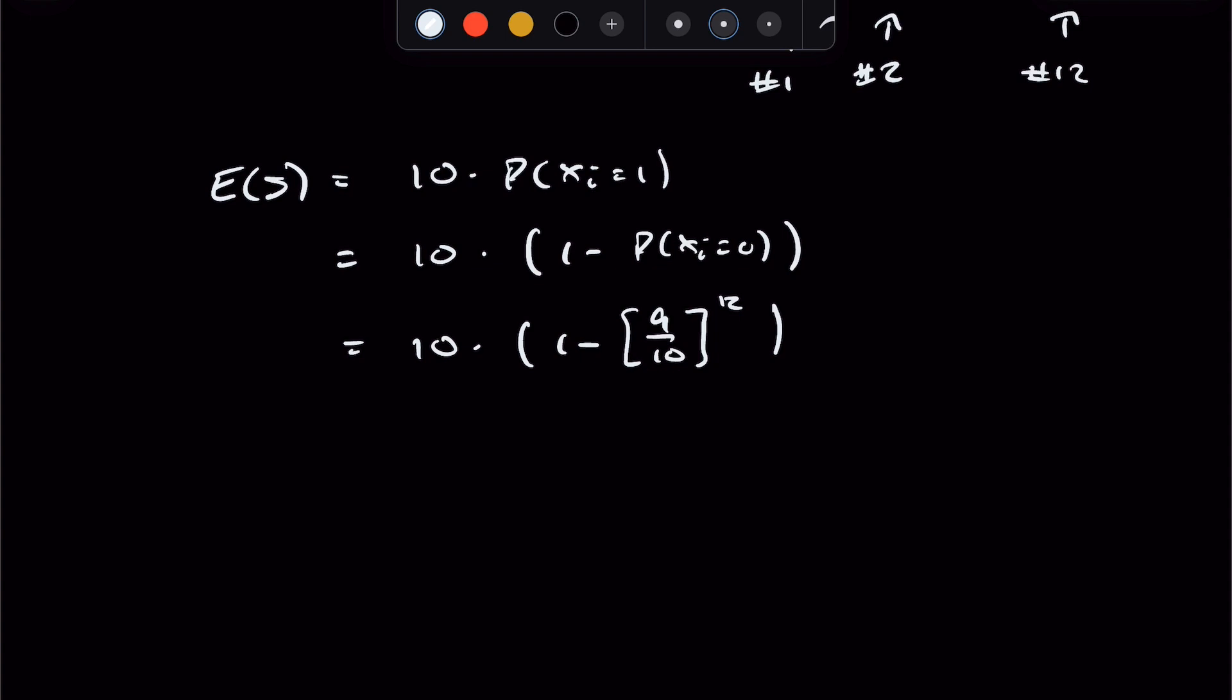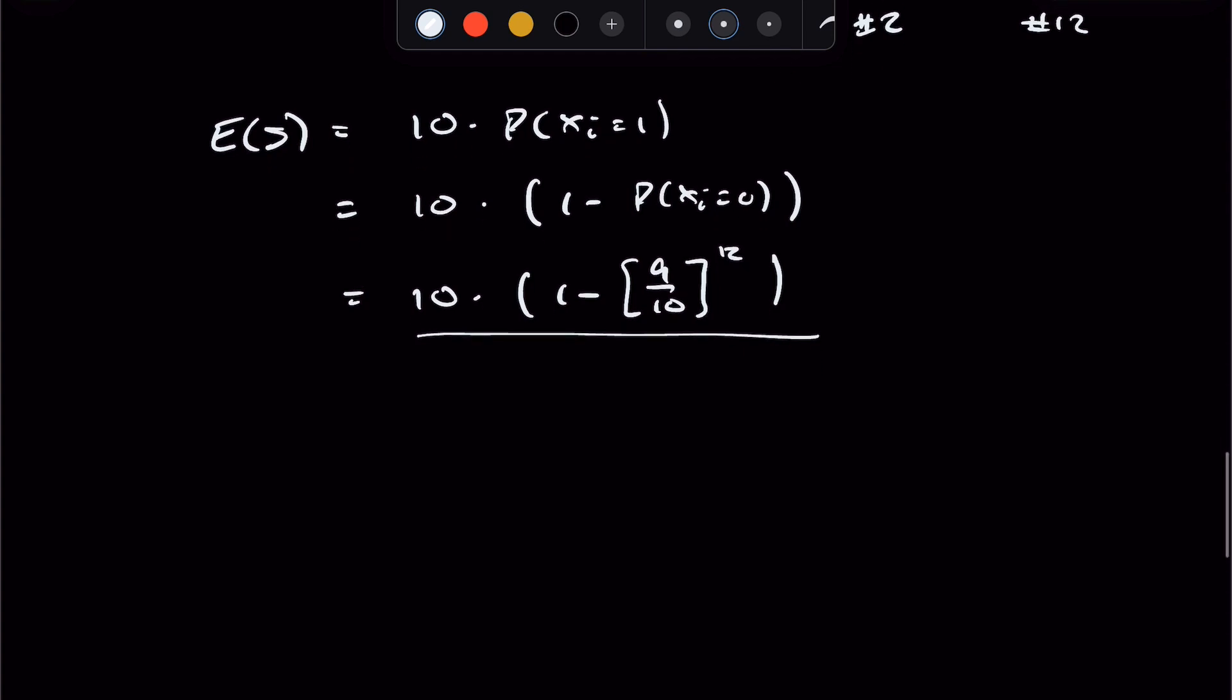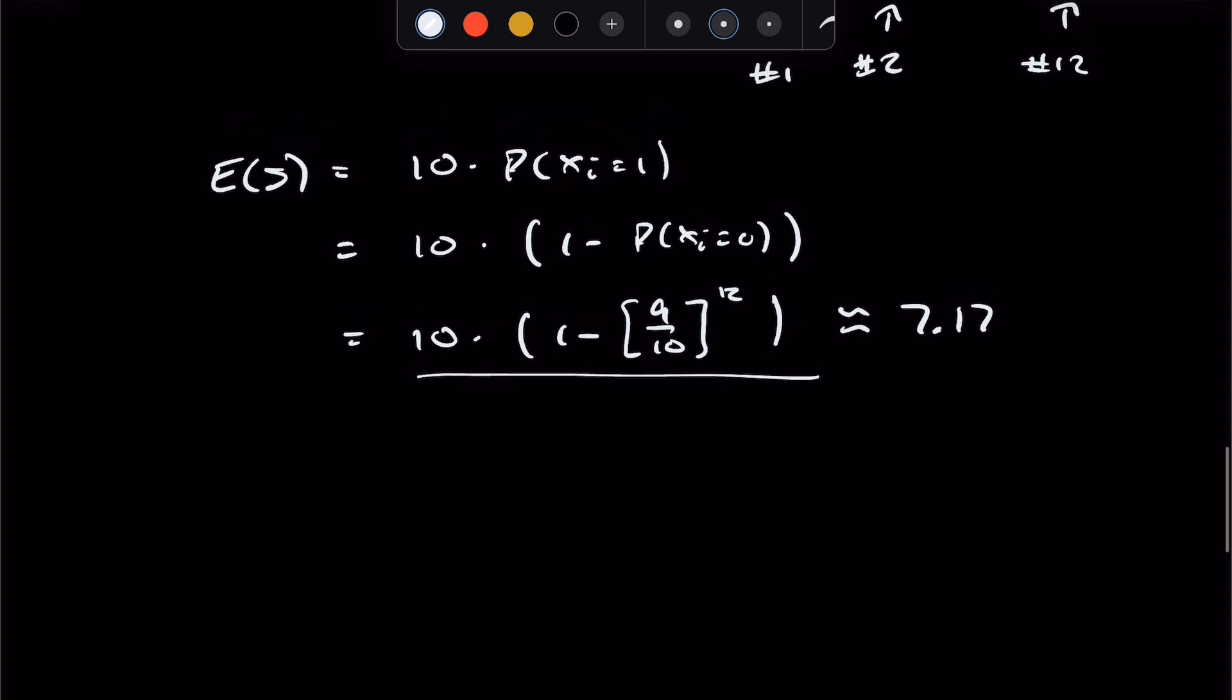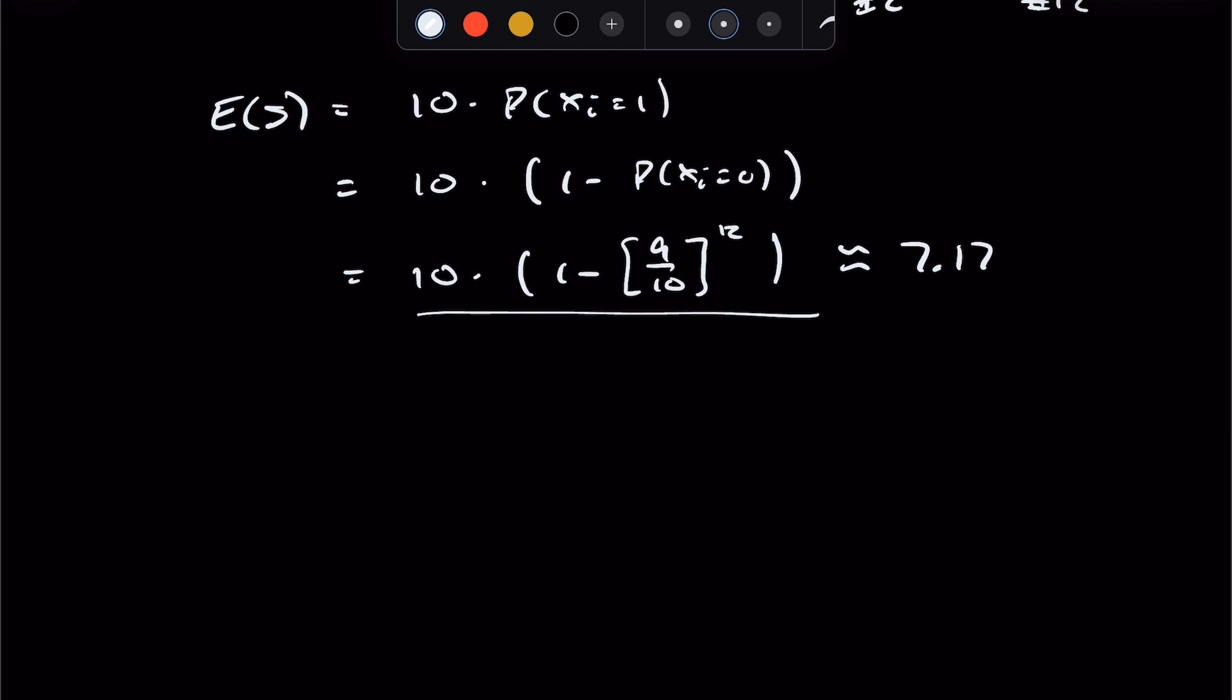It's this whole expression to the 12th power. And like, this is actually our answer right here. And on most quant interviews, I don't believe that they would be expecting you to solve this or reduce it in any way. But I use the calculator to verify that this expression is roughly around 7.17, which means that for the 12 people, we are expected to stop at around 7 floors to drop them all off. I hope this explanation made sense.